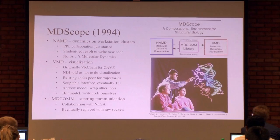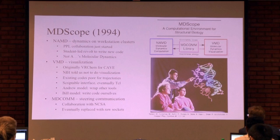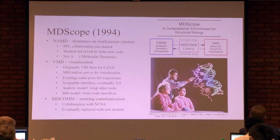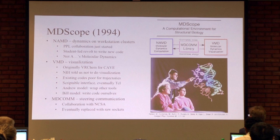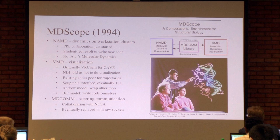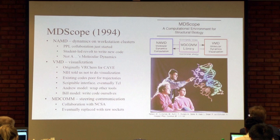VMD, Visual Molecular Dynamics, was the visualization code. It started out as something called VRChem because the CAVE had shown up at NCSA — it seemed like a good idea to have molecules in the CAVE so you could stand inside the molecule. The NIH actually told us we didn't have to do visualization since they already had a resource for that — stick to MD. We sort of ignored that because existing codes didn't handle molecular dynamics trajectories very well. This turned out to be the right decision. It had a scriptable interface from the very start, eventually converted to TCL.